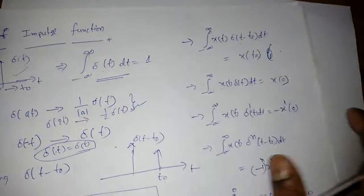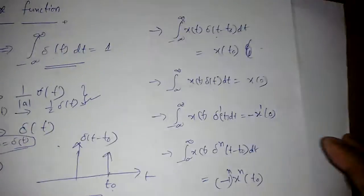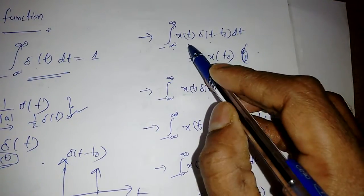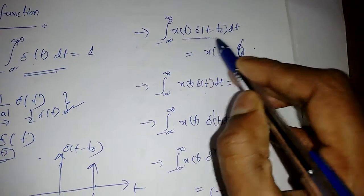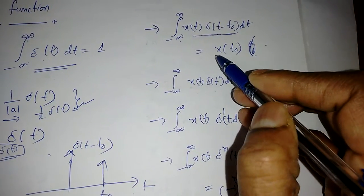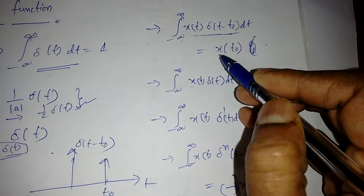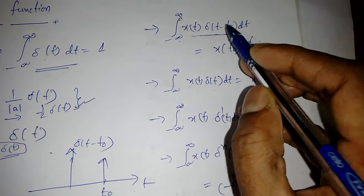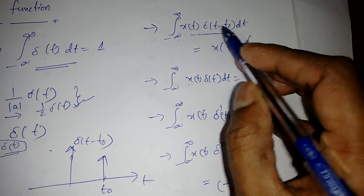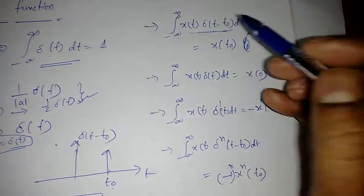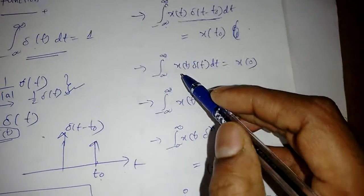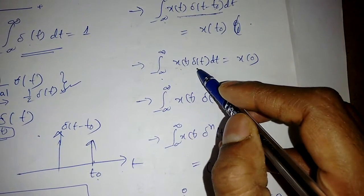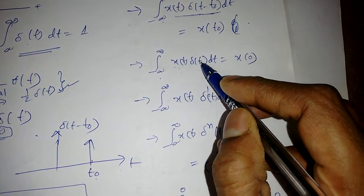The sifting property states: the integral from minus infinity to infinity of x(t)·delta(t - t₀) dt equals x(t₀), assuming t₀ is between minus infinity and infinity. Similarly, integrating x(t)·delta(t) — which is delta(t - 0) — gives x(0).